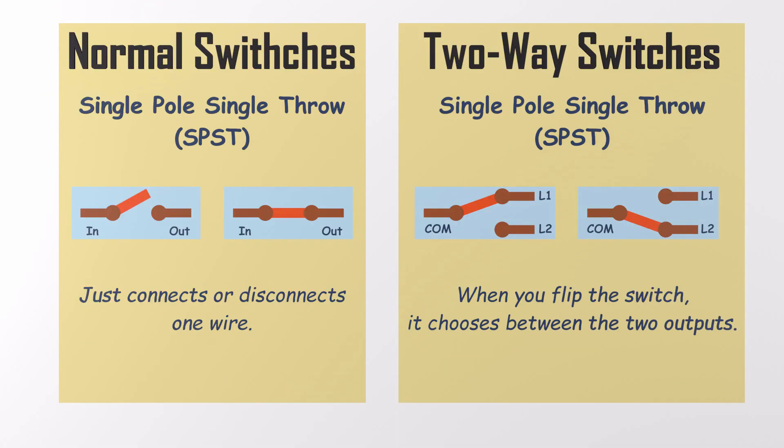Now two-way switches aren't your average wall switch. A regular switch, called a single pole switch, just connects or disconnects one wire. But the two-way switch, or single pole double throw switch, has one input called the common and two outputs. When you flip the switch, it chooses between the two outputs. And good news, the price of a two-way switch is pretty much the same as a regular one.